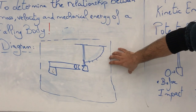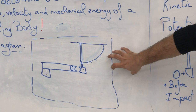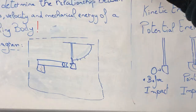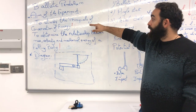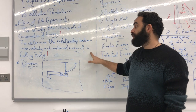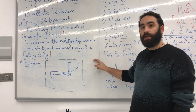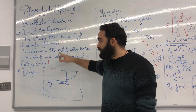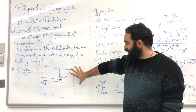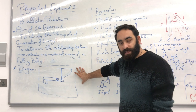If you don't draw it by hand or if this diagram is not there, you also get a zero. The experiment is called the ballistic pendulum. The aim is to study the principles of conservation of energy and to determine the relationship between mass, velocity, and mechanical energy of a falling body, including the exclamation marks — they should be present in your report, as well as the diagram. You draw it by hand, you put your name and your student number — that is the diagram.